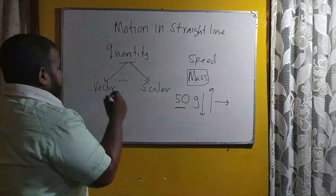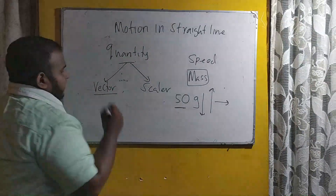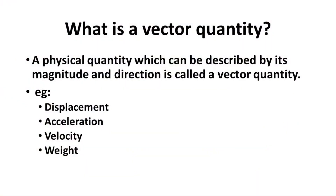But when it comes to vector quantity, a vector quantity is a physical quantity which can be described by both its magnitude and its direction. So the definition has two things: the first is magnitude, and the second is direction.